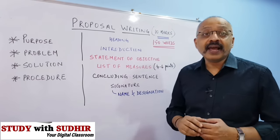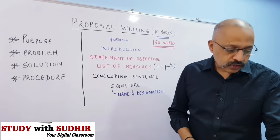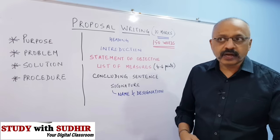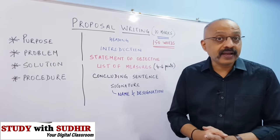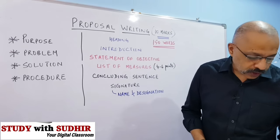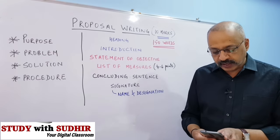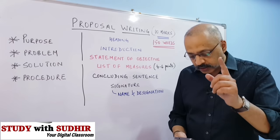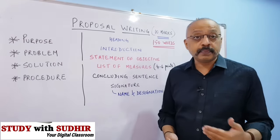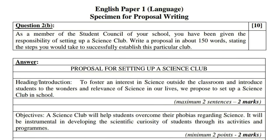The first important part is the heading. Let's take the example which has come from the council, because that will give you a good idea of what you need to do. The example given is: as a member of the student council at your school, you have been given the responsibility of setting up a science club — which could be a bio club, a physics club, or a chemistry club. Write a proposal in about 150 words stating the steps you would take to successfully establish this club.